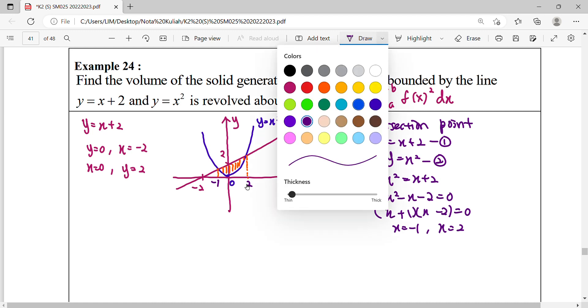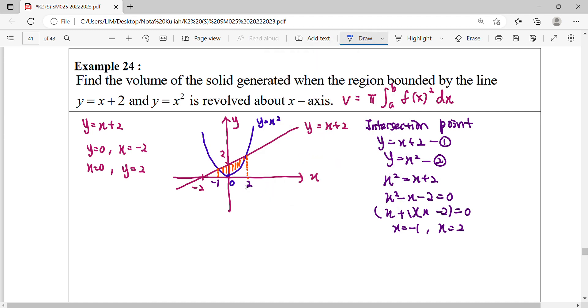So therefore we continue to find our volume. So volume can be generated: π integral from -1 up to 2.